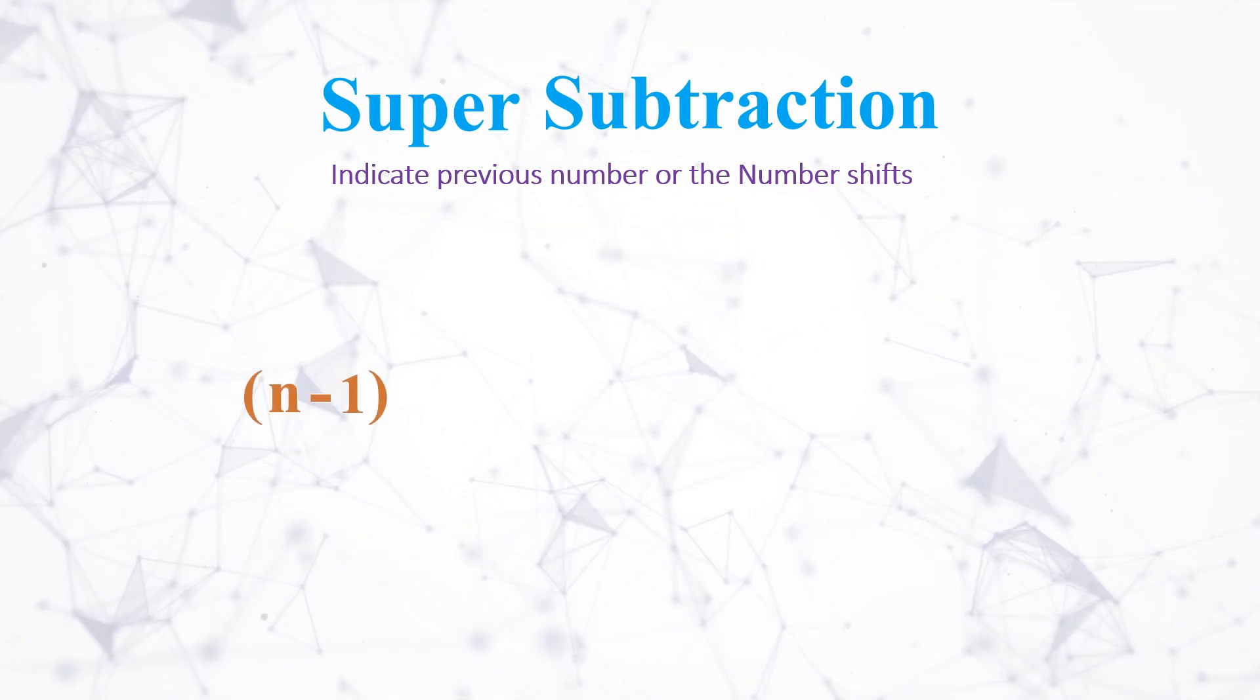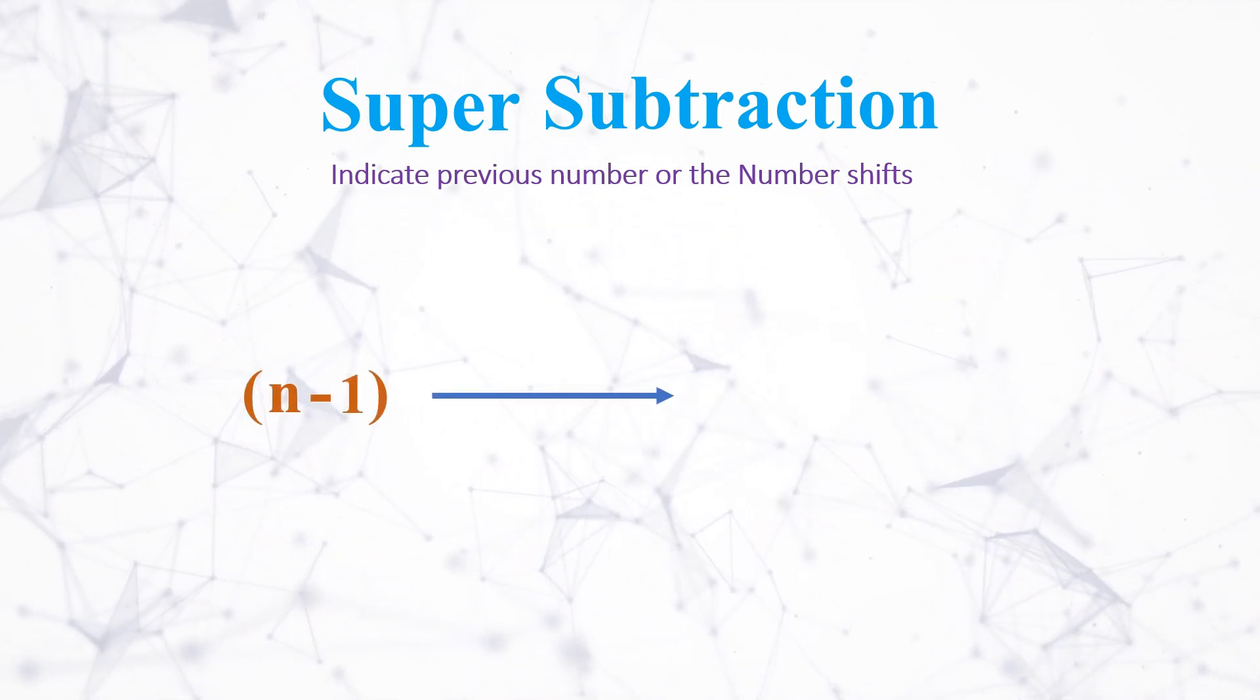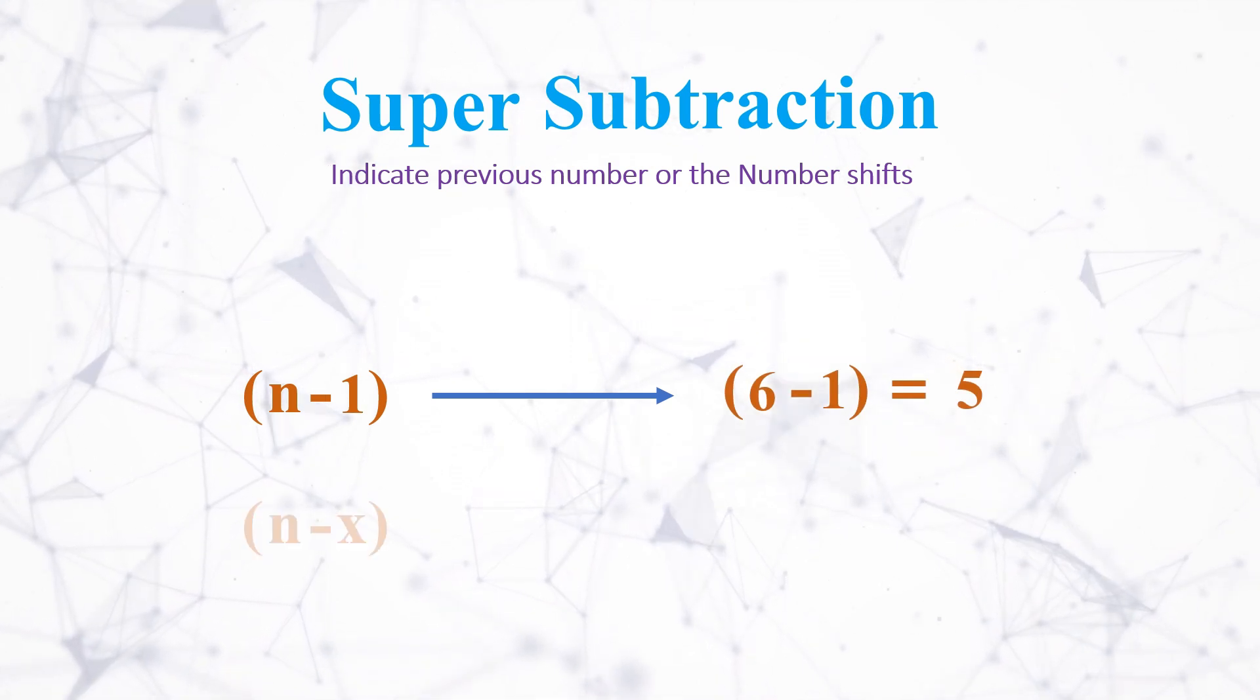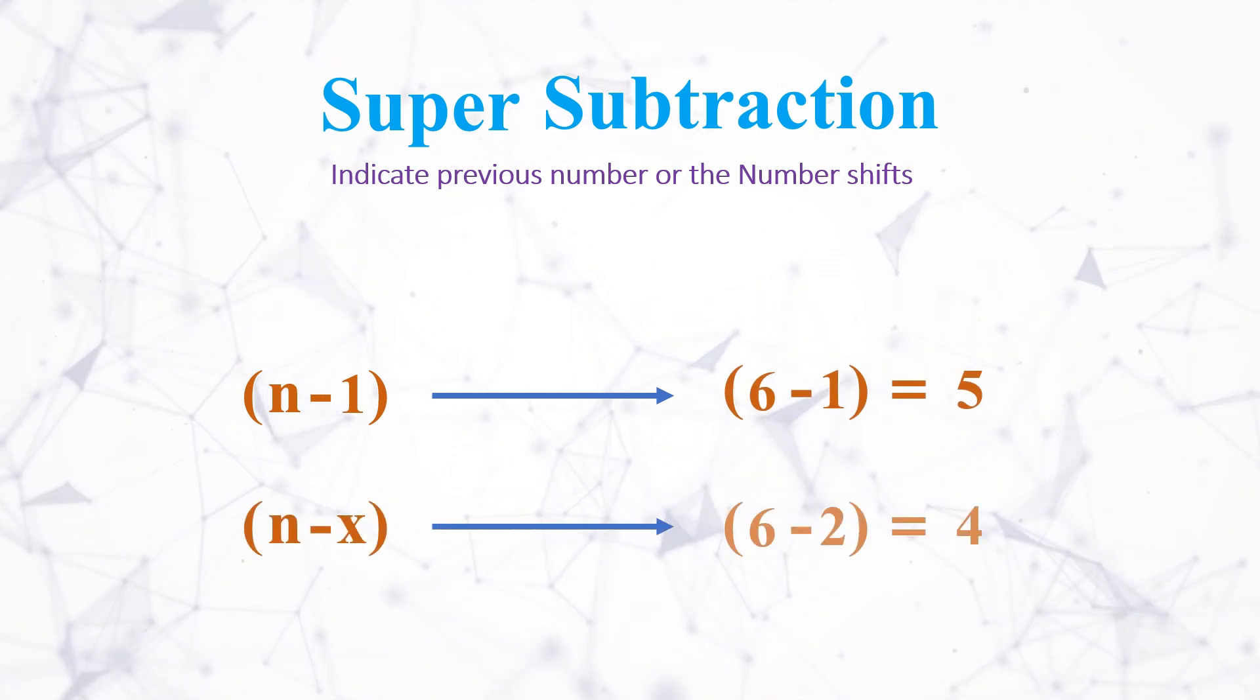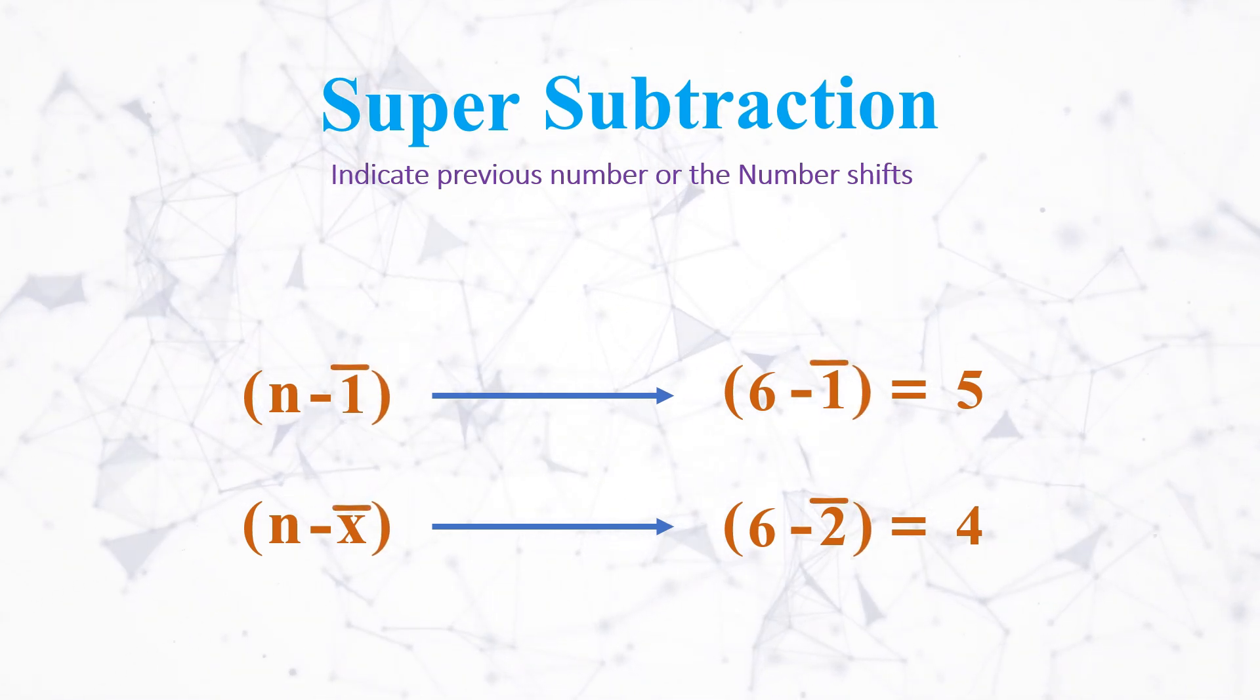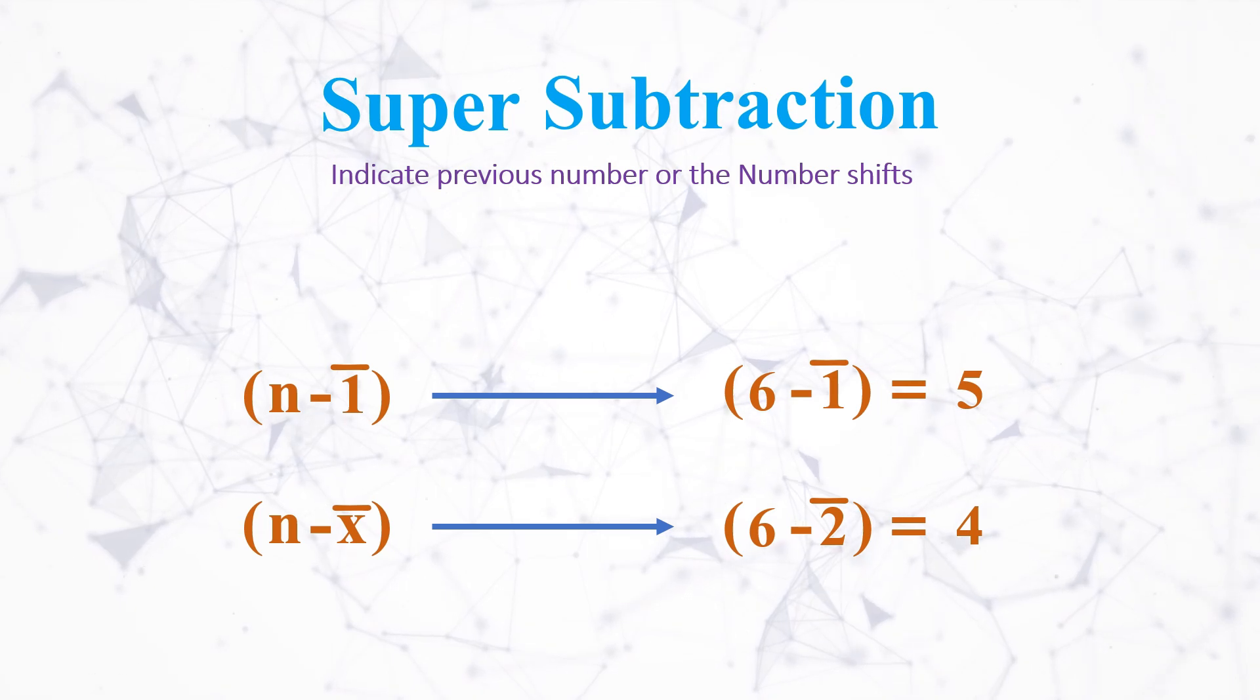The second use case is to indicate previous numbers or number shifts. There are equations in real numbers that are constructed in certain logic such that n minus 1 indicates the previous number, or n minus x indicates the shift of magnitude by x. So such cases, super subtraction should be used to clearly distinguish the outcome of the operation.